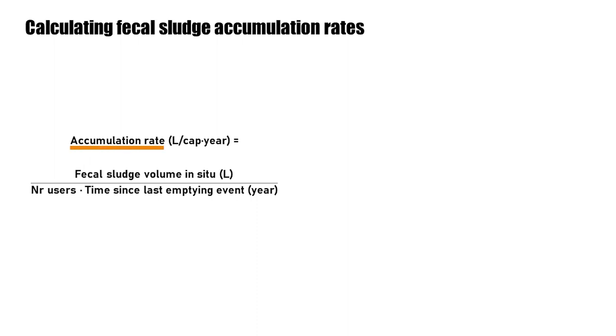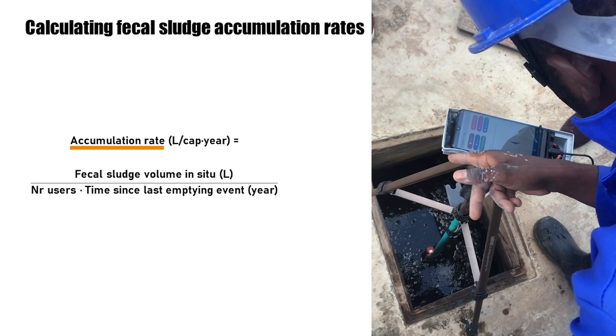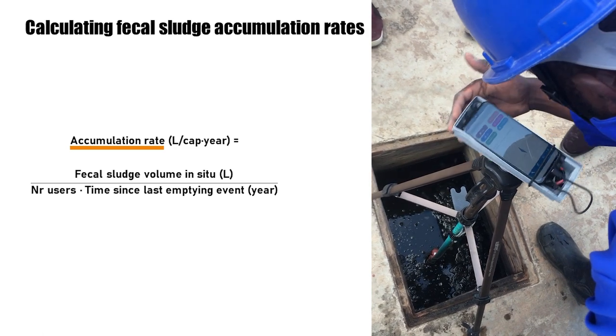Methods for measuring accumulation rates are mentioned in the methods for fecal sludge analysis book. For example, with a vol-laser device as shown here.